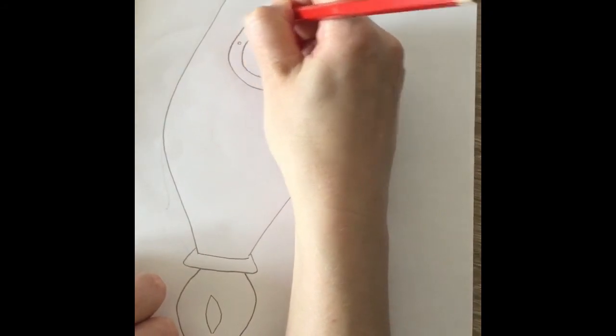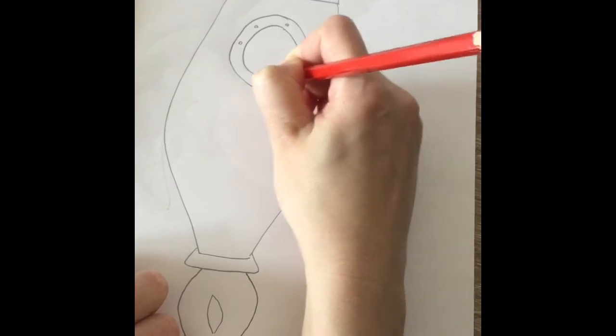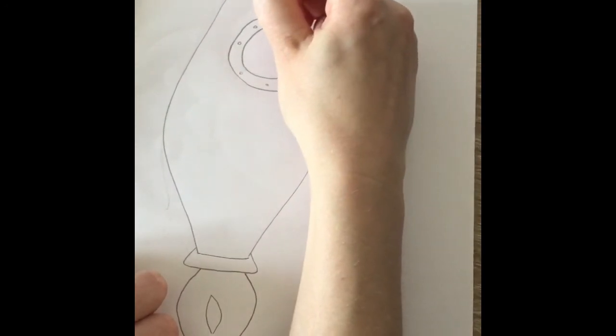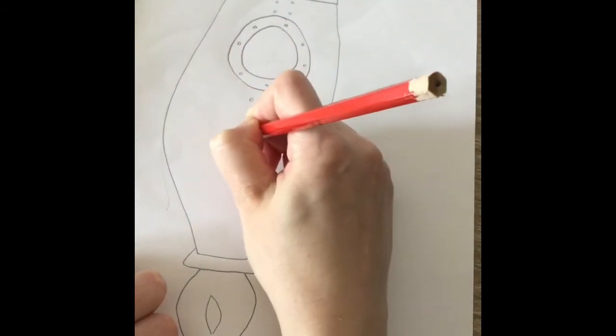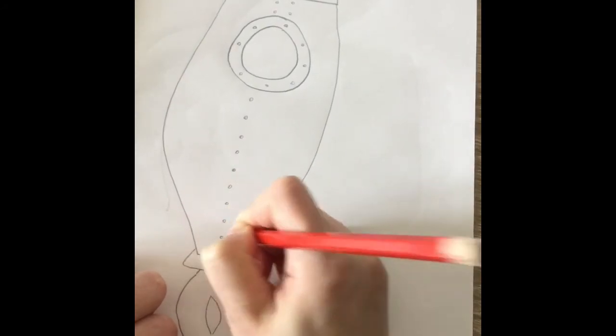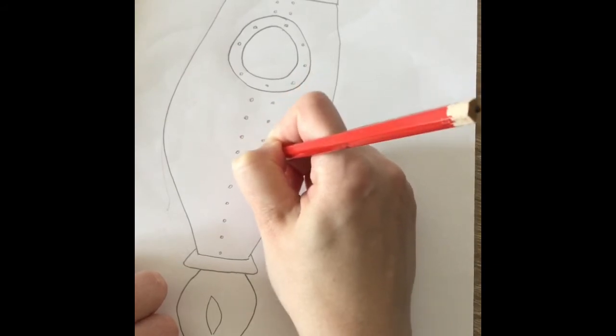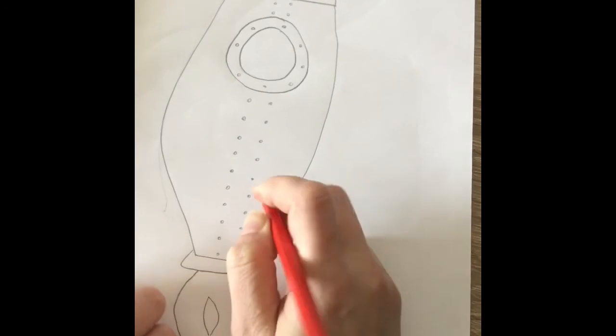I'm going to draw some bolts on because that's what keeps our rocket ship together, the bolts. And now I'm going to draw some bolts coming down the rocket ship as well. Just like that, all the way down, just some little circles, little spots, all the way down. There we go. Beautiful.